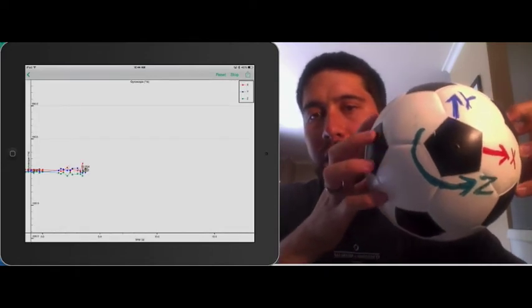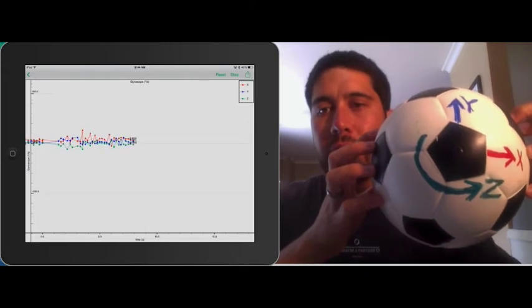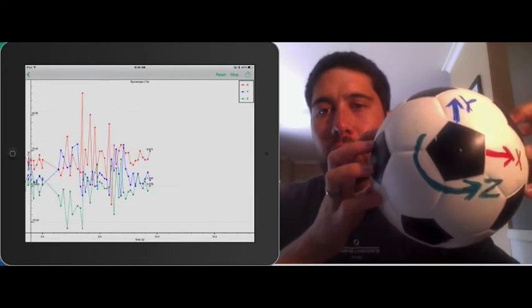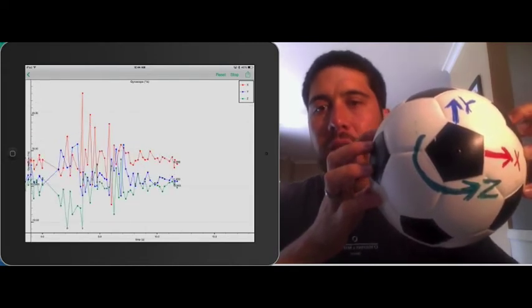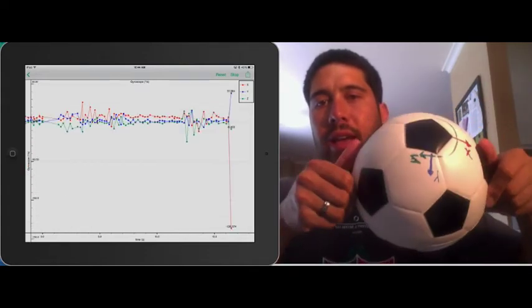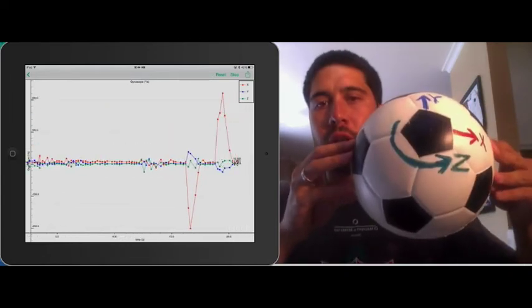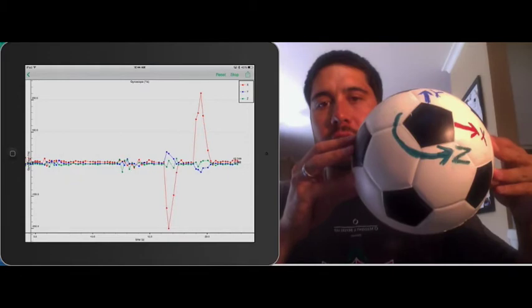And what you should see is we have very little rotation right now. That's just noise from me shaking a little bit. But now, if I rotate about the x-axis, if you remember, x is in red, you can see a large signal in that graph.